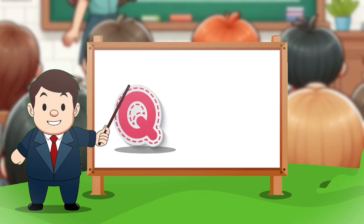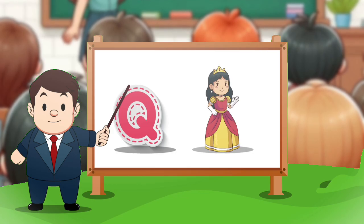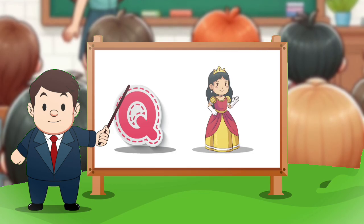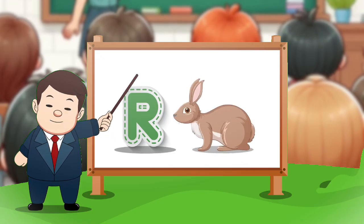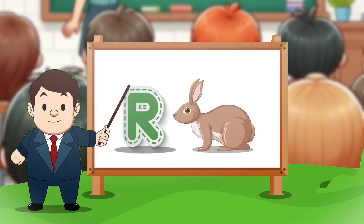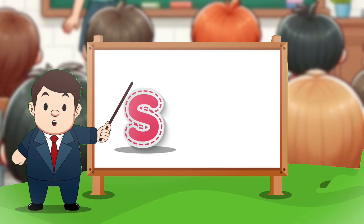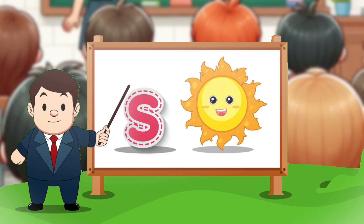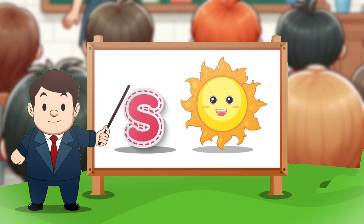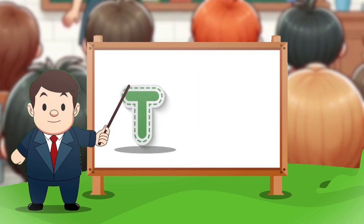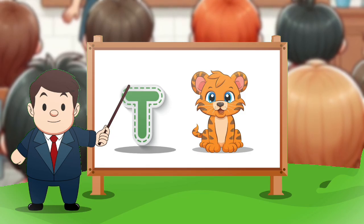Q for queen. R for rabbit. S for sun. T for tiger.